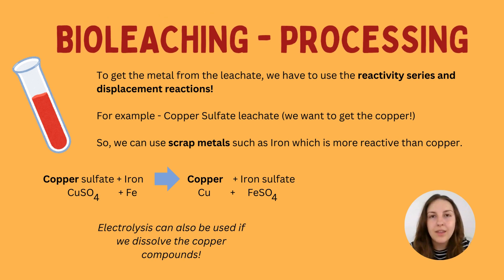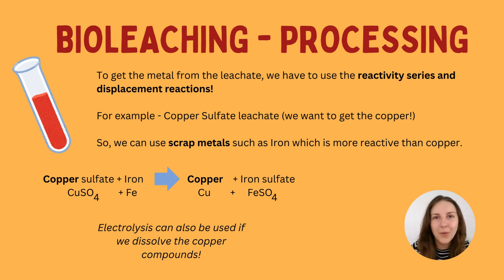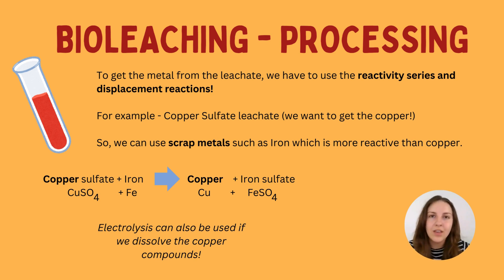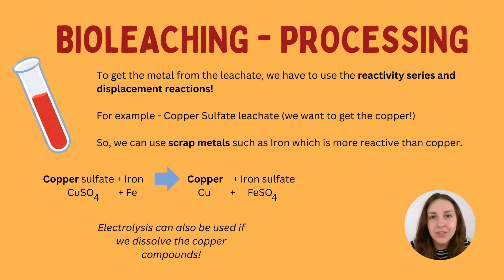To extract the metal from the leachate — to remove it from the acid — we use the reactivity series and displacement reactions. I've done a previous video on this, and it's worth revisiting because at GCSE, examiners like to link paper one topics to paper two content and apply knowledge in context. The reactivity series is essentially a list of metals ordered by reactivity: the most reactive at the top, the least reactive at the bottom.